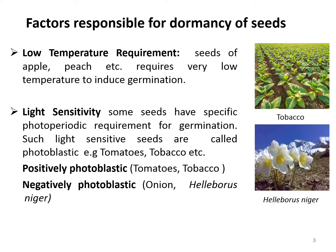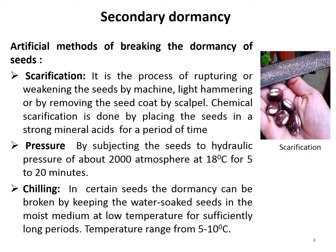In the case of positively photoblastic seeds, light stimulates their germination — for example, tobacco and tomato. In negatively photoblastic seeds, germination is inhibited by light. Secondary dormancy: sometimes seeds fail to germinate due to lack of some specific factor. This type of induced dormancy is called secondary dormancy.